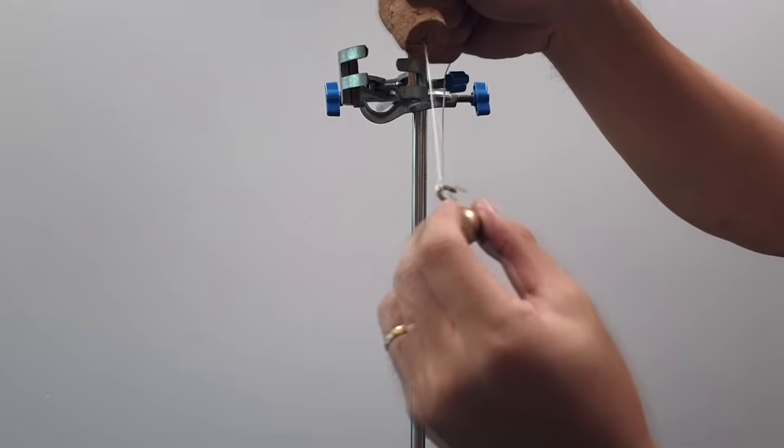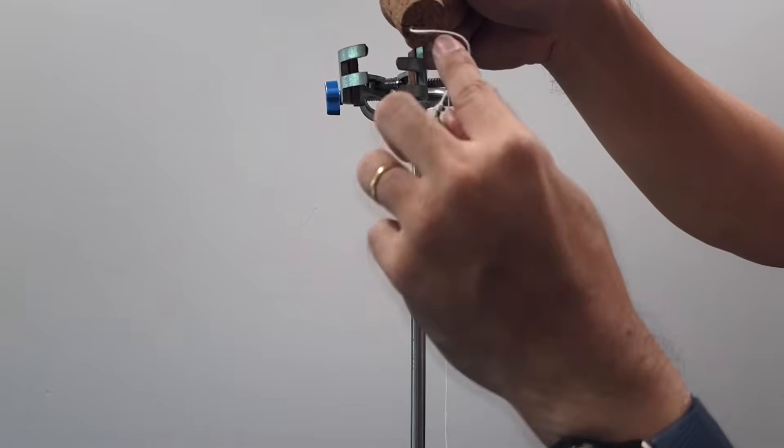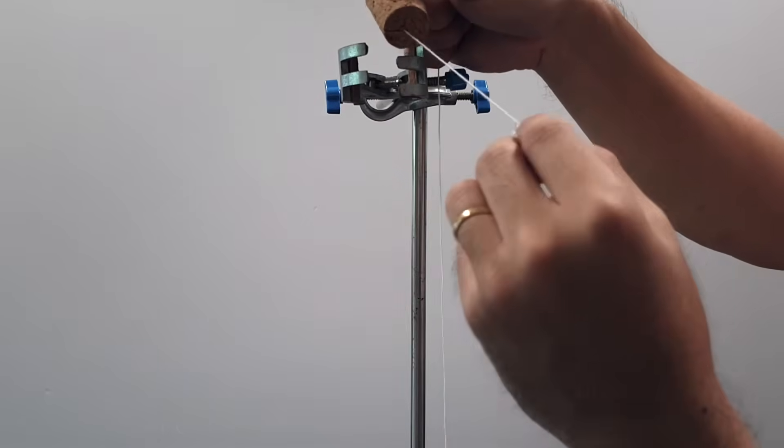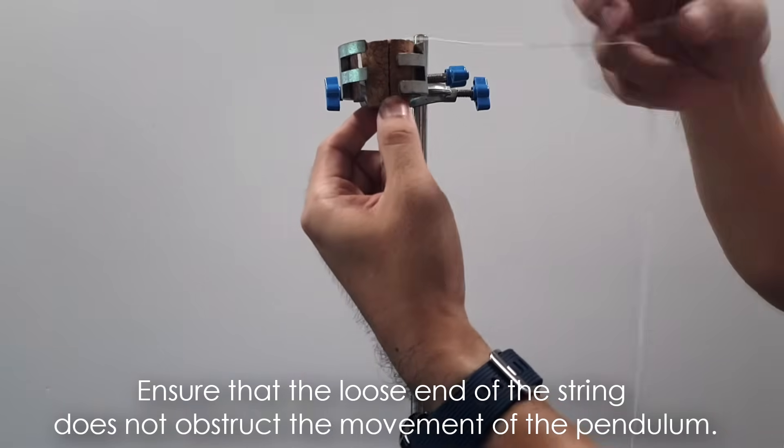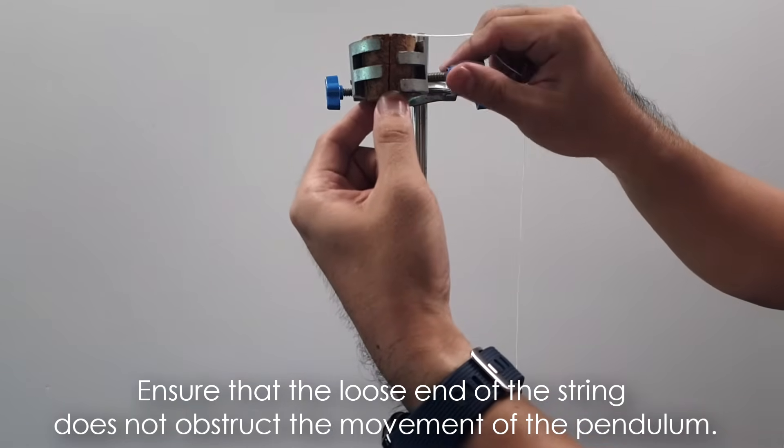If it's parallel to the slit, the string might move inside the cork and this causes a very unstable kind of oscillation or swing later on. So right now you put the cork, secure it to the clamp.